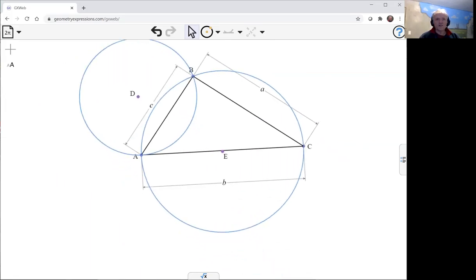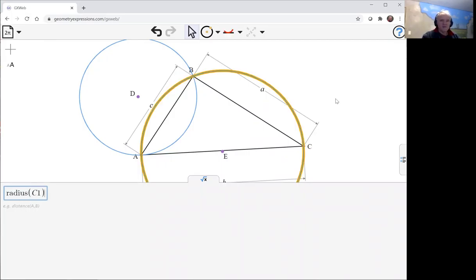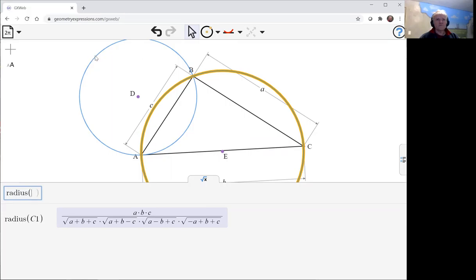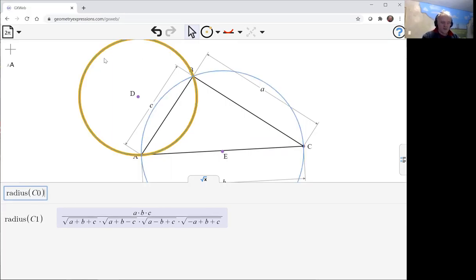And now I'd like to look at the radii of the two things. So let's look at that radius of circumcircle. Looks like that. Radius of the mixed linear circle. Of the mixed linear circle looks like that. It looks very similar.